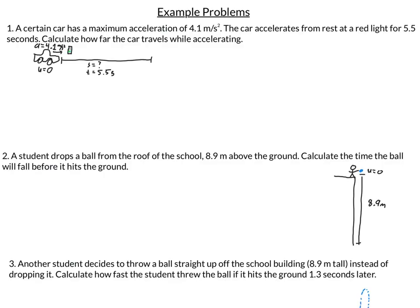Number one: A certain car has a maximum acceleration of 4.1 meters per second squared. The car accelerates from rest at a red light for 5.5 seconds. Calculate how far the car travels while accelerating. I have an a, I have a t, and the car accelerates from rest, meaning the initial velocity is zero. I've drawn a picture, now let's make a variable bank.